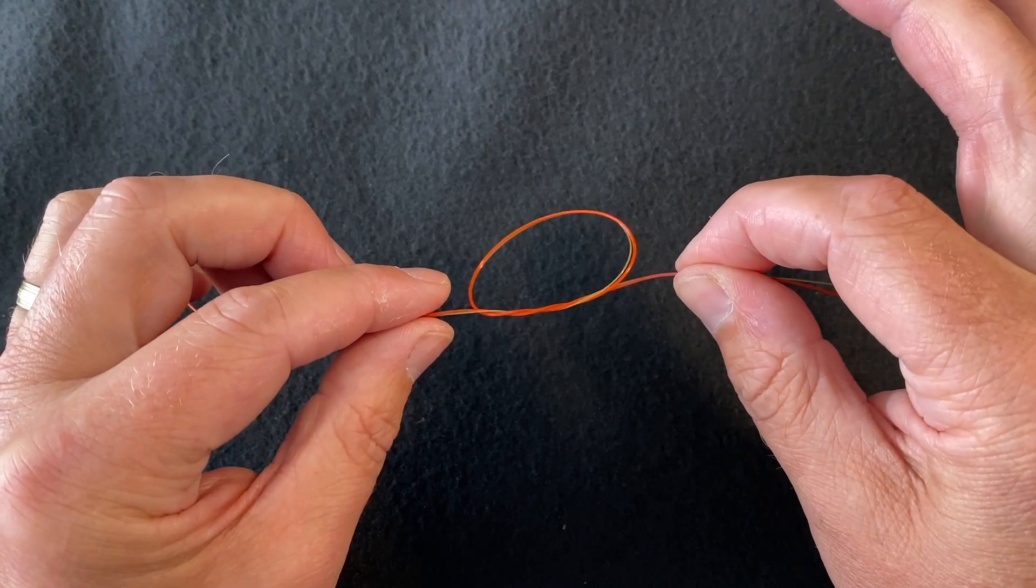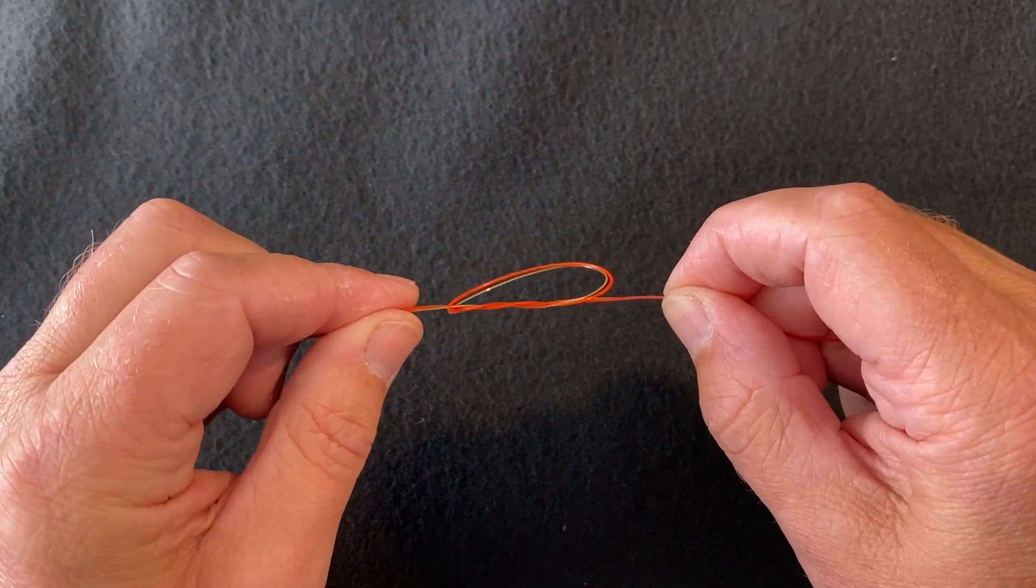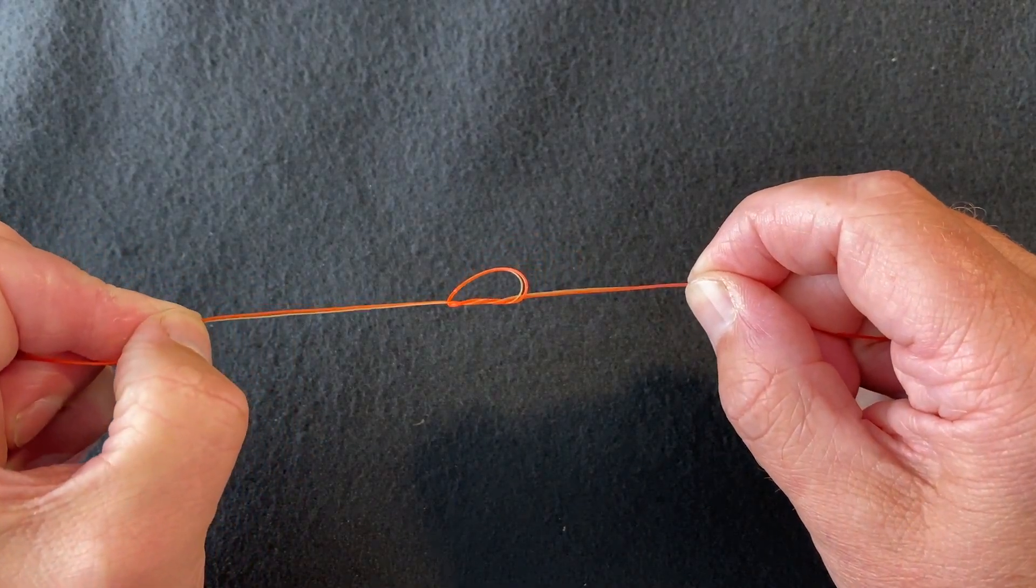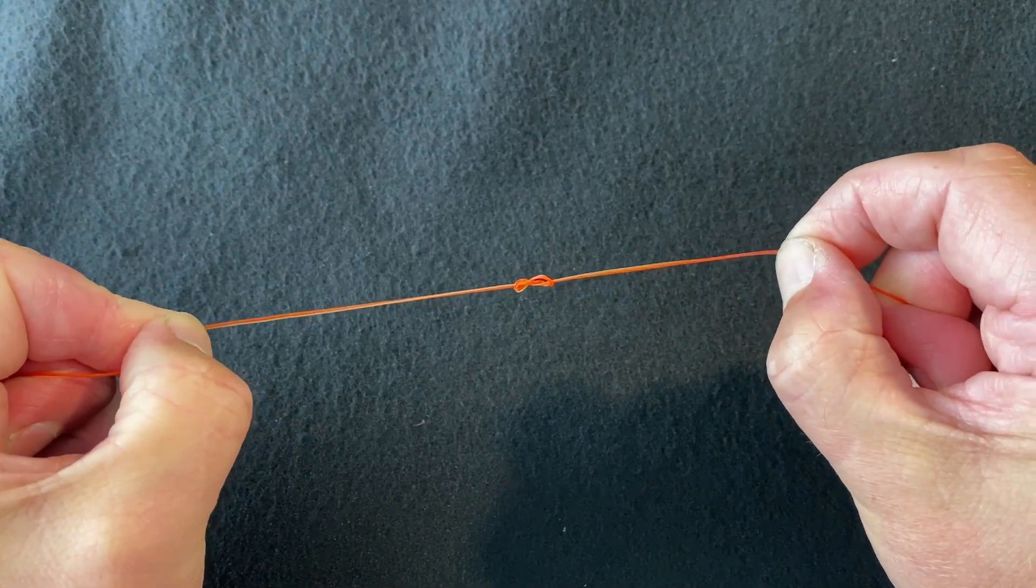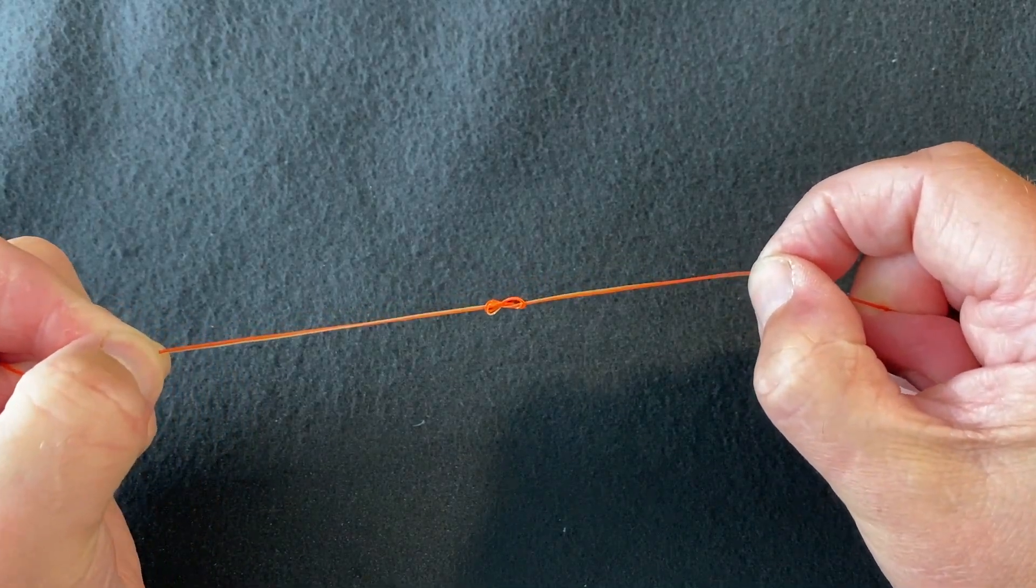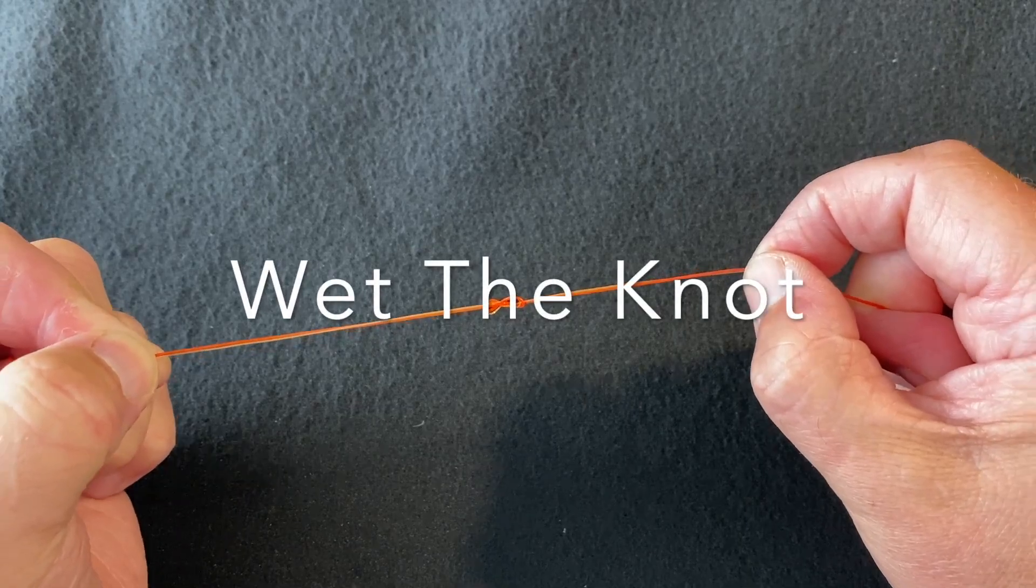Hold the two ends above the knot and the two ends below the knot and pull down gently to form your joining knot. Before fully tightening down on the knot, it's always recommended to lubricate the line, either with saliva or water.